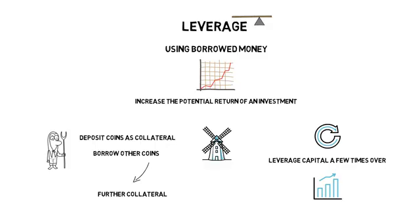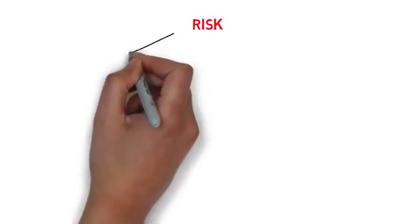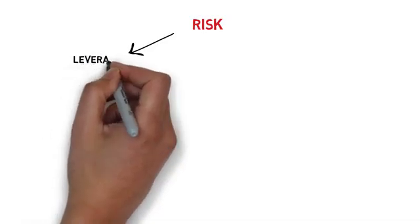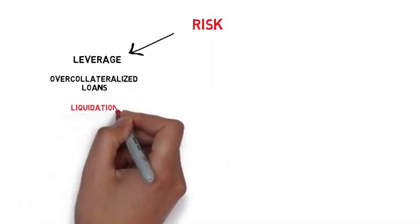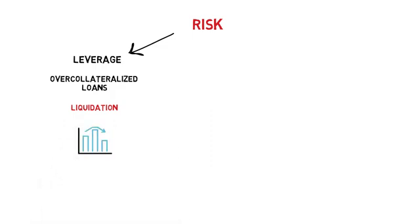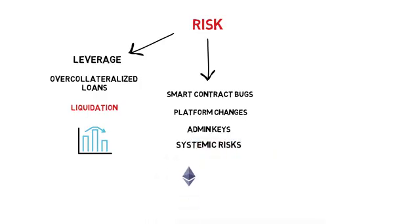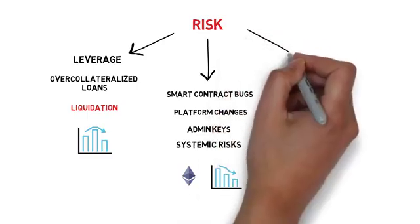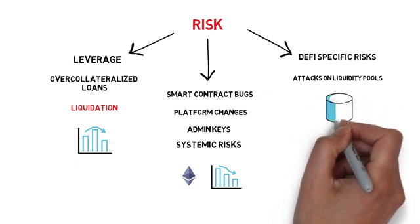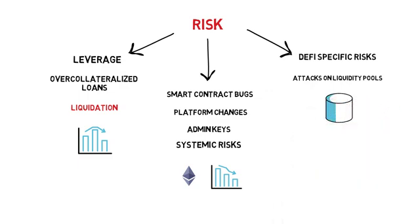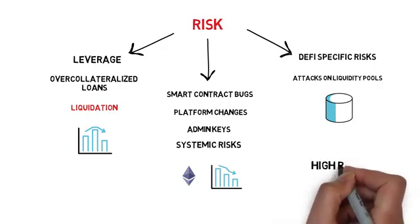The last missing element of double or triple-digit APYs is the high risk that farmers are willing to take. The first risk is related to leverage — all the loans that farmers take are over-collateralized, and the supplied collateral is susceptible to liquidation if the collateralization ratio drops below a certain threshold. Besides liquidation risk, there are standard smart contract risks like bugs, platform changes, admin keys, and systemic risks such as Ether sharply losing its value. On top of that, there are DeFi-specific attack vectors, for example attacks that aim at draining certain liquidity pools. All of these risks together are yet another reason why yield farming returns are so lucrative — it's a high risk, high reward game.